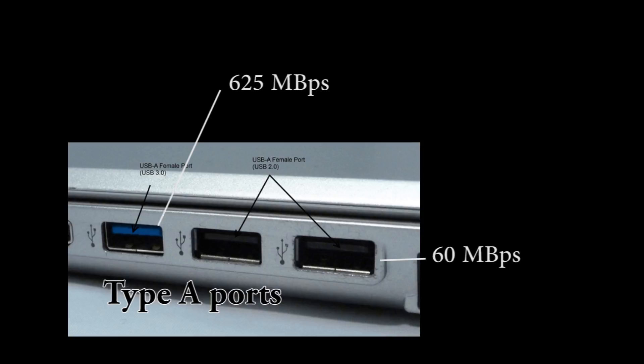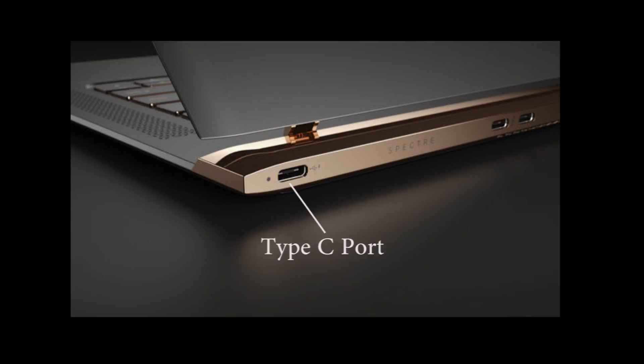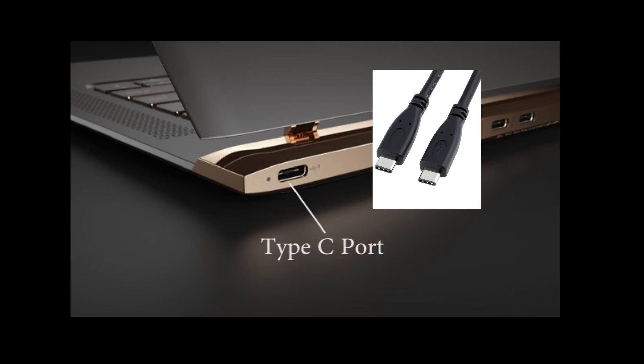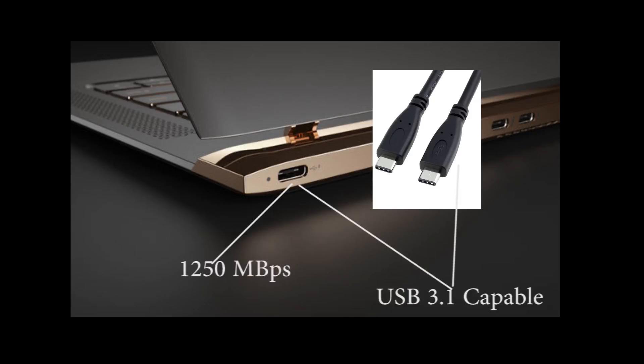Now let's apply that same logic to USB Type-C. Remember that USB Type-C is just a type of head and port, and in order for it to get that maximum speed of 1250 megabytes a second, both the head and the female port would need to be USB 3.1 capable.